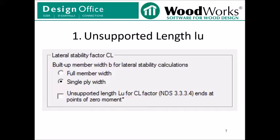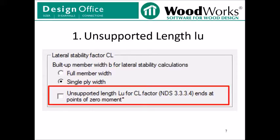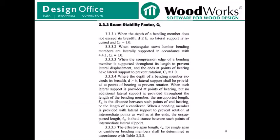There are two options in this location of the design settings. We'll start by going over a feature which was available in the previous version: Unsupported length LU for CL factor, NDS 3.3.3.4 ends at points of zero moment. By default, this feature is not toggled, meaning that LU is calculated based on points of support, but we give you the option of calculating LU based on points of zero moment instead. So let's just highlight the NDS clause 3.3.3.4, which gives guidance on how to calculate LU for a beam.